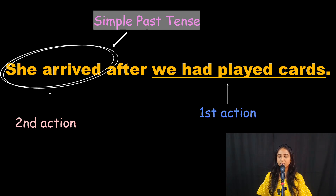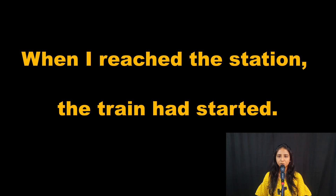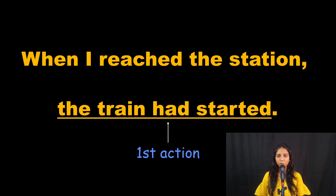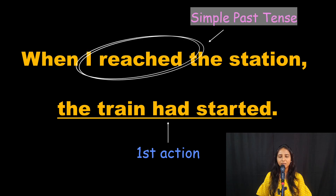Let's look at the second sentence: 'When I reached the station, the train had started.' Let's apply the trick to this sentence. Which part of the sentence happened first? The first action is 'the train had started', and the later action, which is always in the simple past tense, is 'I reached'. So that happened next.